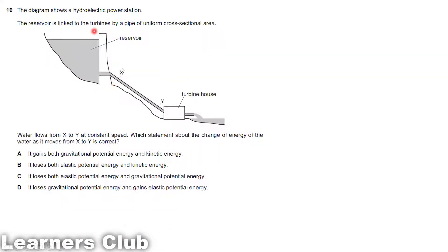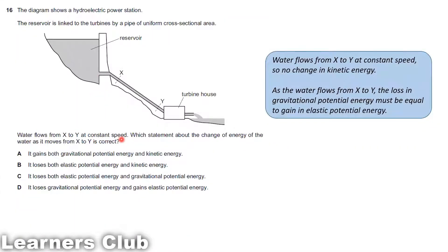The water is flowing from point X to Y at constant speed. When it's flowing with constant speed, that means there is no loss or gain in kinetic energy. There is no change in the kinetic energy. Water flows from X to Y at constant speed, so no change in kinetic energy. But the height is decreasing, therefore there is a loss in potential energy. That should be a gain in elastic potential energy.